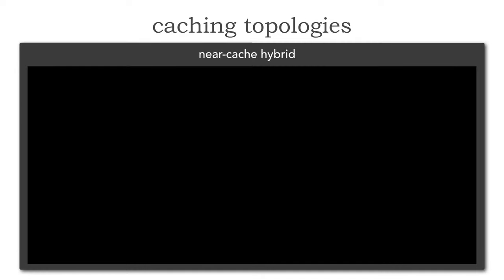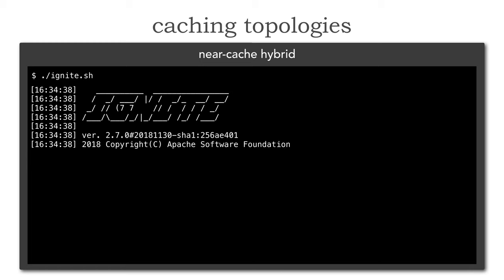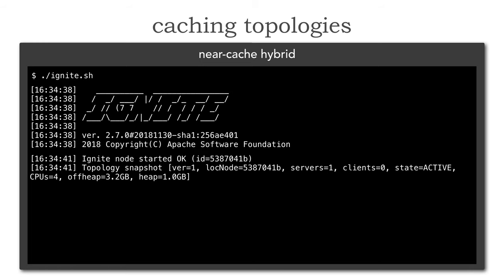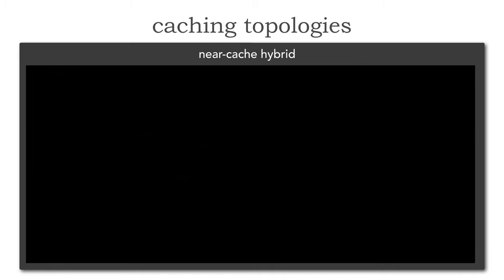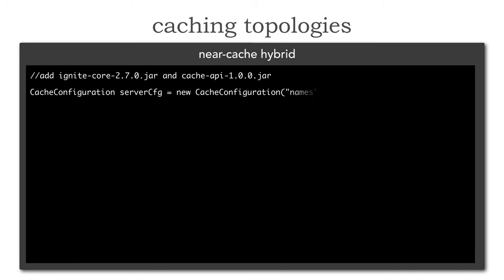Let's actually take a look. Because a near-cache hybrid does have an external server like a distributed cache — again, this is a hybrid — we do need to start Ignite. So let's get Ignite started right here. This is where the full backing cache is located. Notice this is external to my services. Now within each service, let's see what the code would look like. First, we add the necessary JARs or DLLs associated with both Ignite and any other services we need.